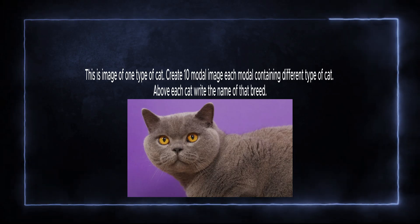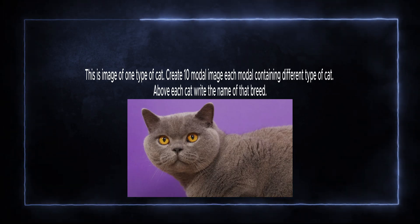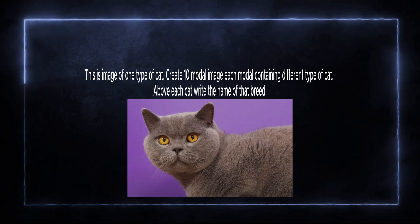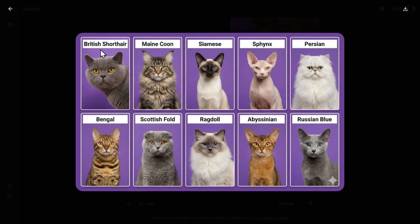Now let's play with cats. Based on one image of a cat, let's create a ten-model image explaining different types of breeds. Here they are - completely correct and interesting. First the uploaded image: British Shorthair. Then Maine Coon, Siamese, Persian. All of those cute furry beings are here as a really educational poster. Extremely good.